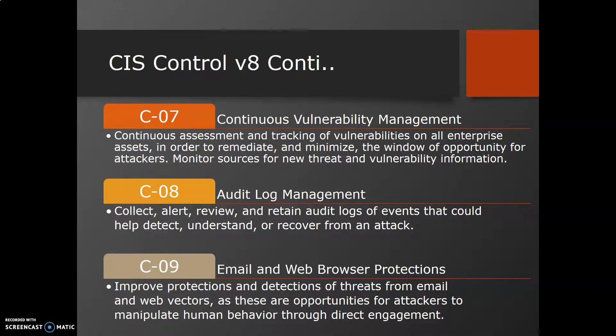The seventh control is Continuous Vulnerability Management — continuously assessing and tracking vulnerabilities on all enterprise assets in order to remediate and minimize the window of opportunity for attackers, and monitoring sources of new threats and vulnerability information. All applications, hardware, and software have vulnerabilities. Attackers regularly scan networks and devices looking for loopholes to exploit. We need to conduct both internal scans — looking at our networks from the inside — and external scans from an attacker's point of view through our public-facing addresses.